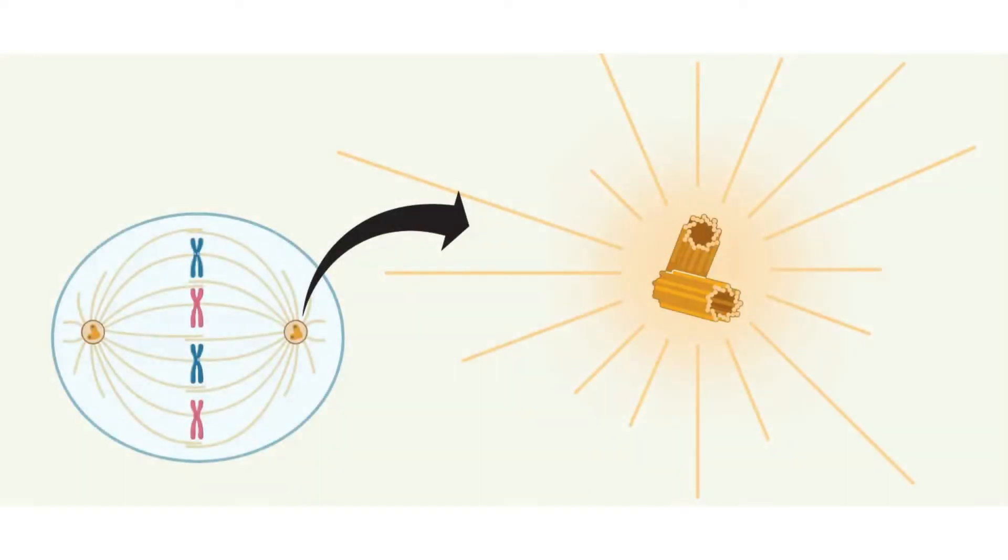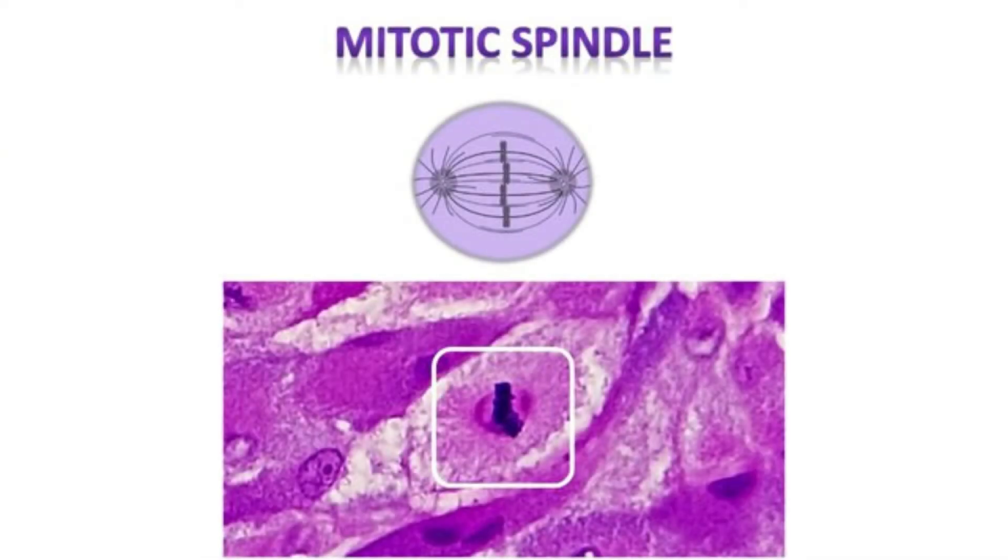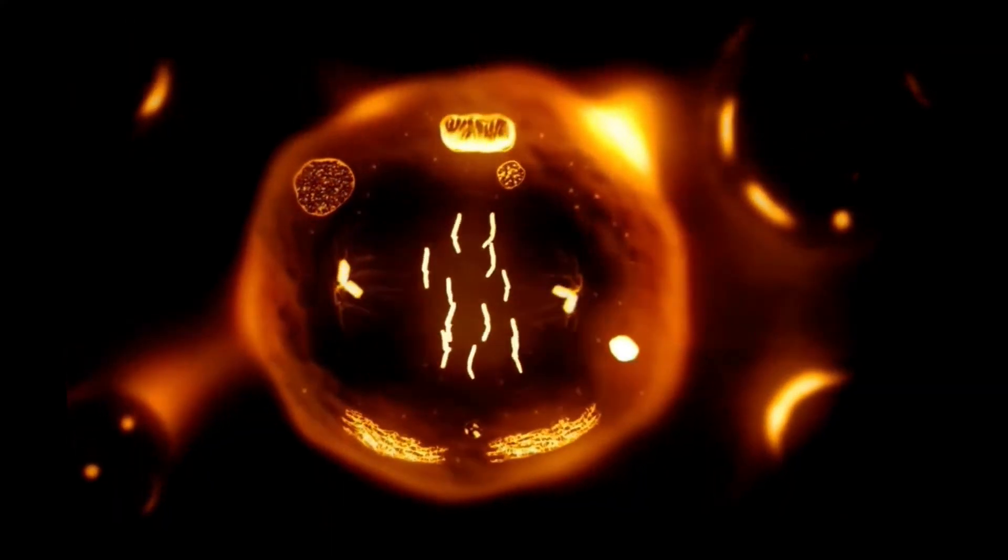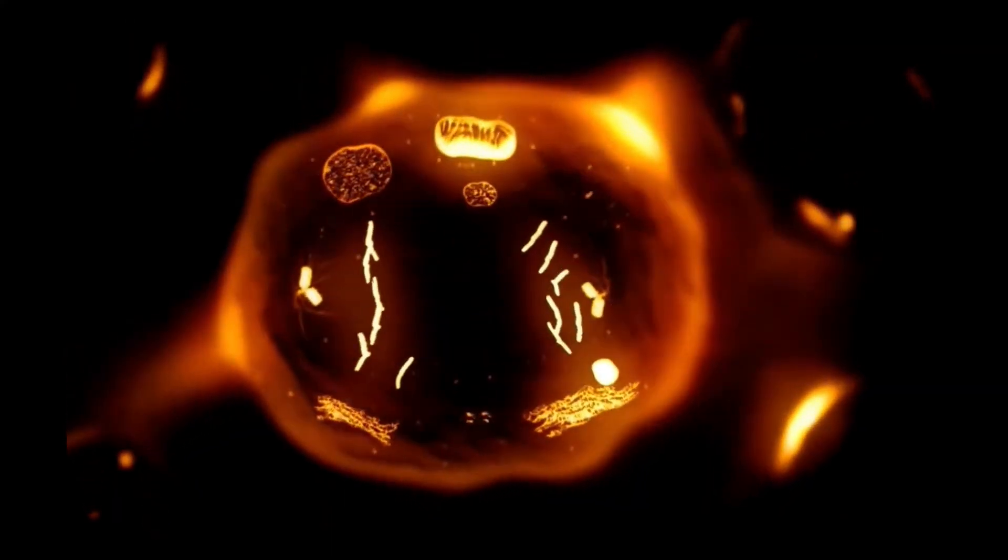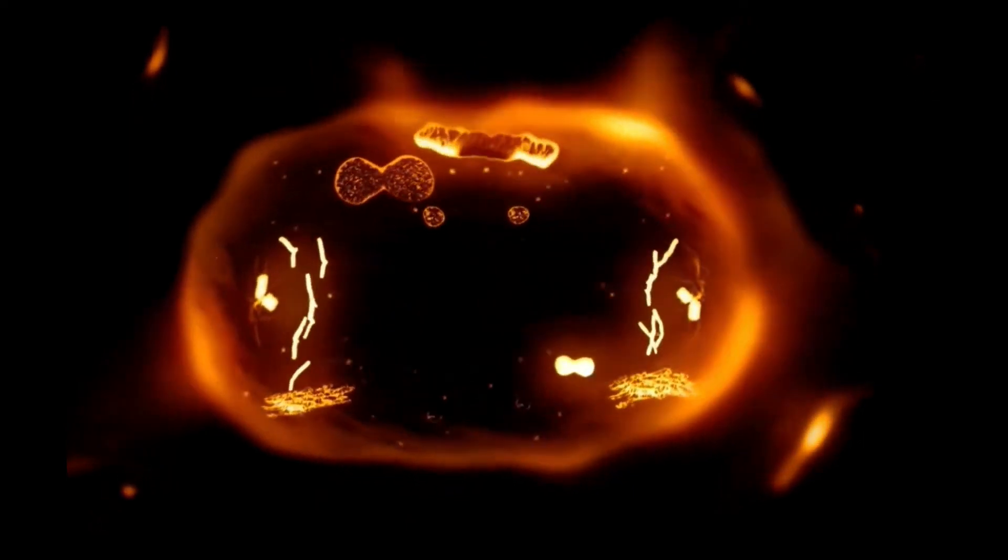Cell Division. Centrioles are indispensable during cell division, both in mitosis and meiosis. During these processes, the centrioles play a pivotal role in forming the mitotic spindle, a structure that segregates chromosomes into daughter cells. The spindle fibers emanate from the centrioles, ensuring the precise distribution of genetic material.